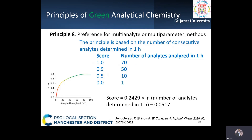In the eighth principle, multi-analyte or multiple-parameter methods are preferred over methods using one analyte at a time. The score is based on the number of consecutive analytes analyzed in one hour — greater the analyte throughput, greater the score.